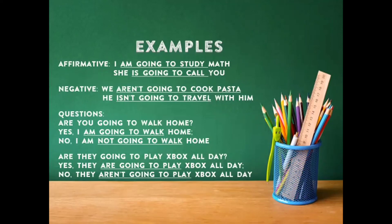Negative: We aren't going to cook pasta. He isn't going to travel with him. Fíjense que el verbo to be: I am, she is, we aren't, he isn't — el verbo to be tiene mucho que ver con el sujeto. Questions: Are you going to walk home? Yes, I am going to walk home. No, I am not going to walk home. Fíjense que el I am no se contrae como el aren't y el isn't, sino que se coloca separado: I am not.